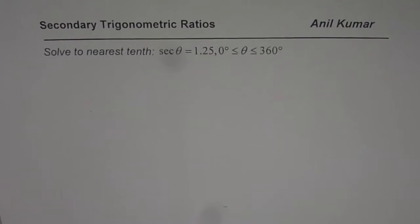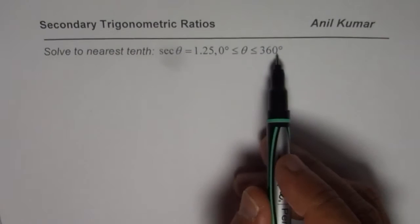I am Anil Kumar and now we will further explore secondary trigonometric ratios. The question here is, solve to the nearest tenth, secant theta equals 1.25 and theta is between 0 to 360 degrees.